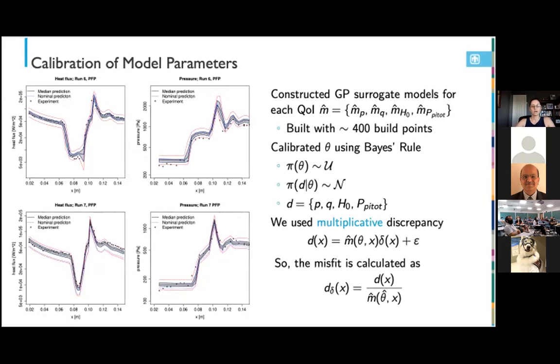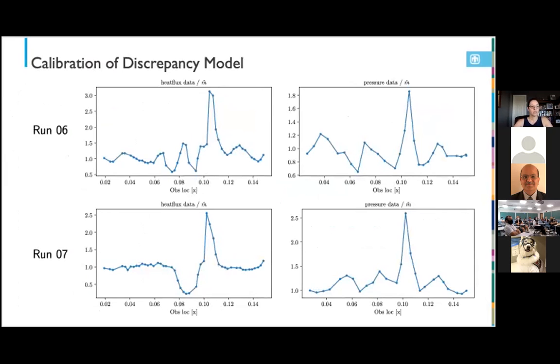So during those calibration efforts, there revealed some discrepancy between the code and the experimental data. Here we'll focus on two of those calibration scenarios, which they call run six. Those are the figures on top and run seven. Due to the expense of running SPARC, we constructed a Gaussian process surrogate model using output from previous SPARC simulations, which consisted of about 400 samples. We constructed one surrogate for each of our four QOIs. The model parameters were calibrated using Bayes rule with uniform priors and a Gaussian likelihood. As calibration data, we included all four types of data. For the heat flux and the pressure data, only the initial data points from the four cone were used because that's the region of the cone where the physics are well understood. But the entire heat flux and pressure data set will be used to calibrate the discrepancy model.